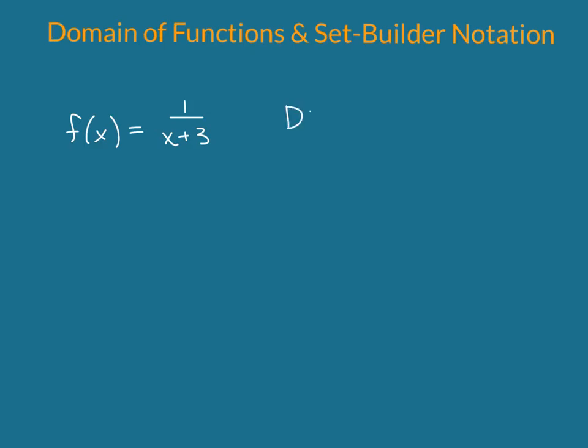So we can write our domain in what's called set-builder notation, and that looks like this. We're going to do those fun squigglies. There we go. So our domain is all x such that x does not equal negative 3. So that is what set-builder notation looks like.